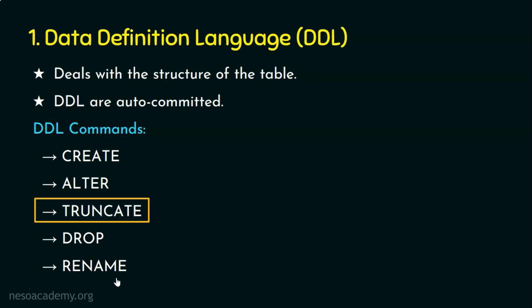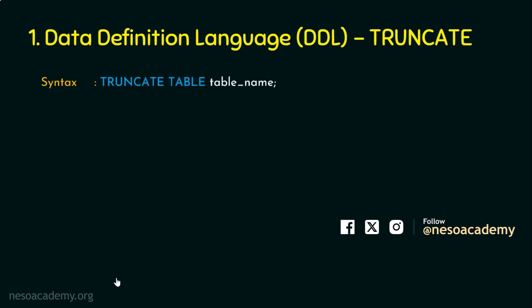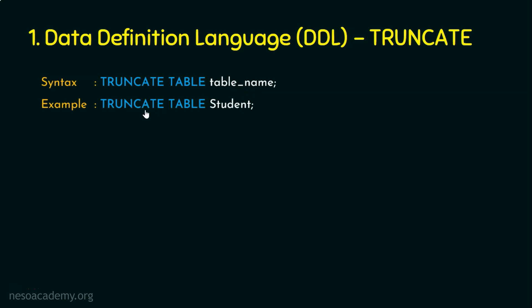Let's start with the TRUNCATE DDL command. The name itself tells us we are going to remove all the rows from a table. If a table contains 1000 rows and we want to remove all 1000 records at one go, we can use TRUNCATE. The syntax is simple: TRUNCATE TABLE table_name. For example, to truncate the student table: TRUNCATE TABLE student — all rows from the table will be removed.